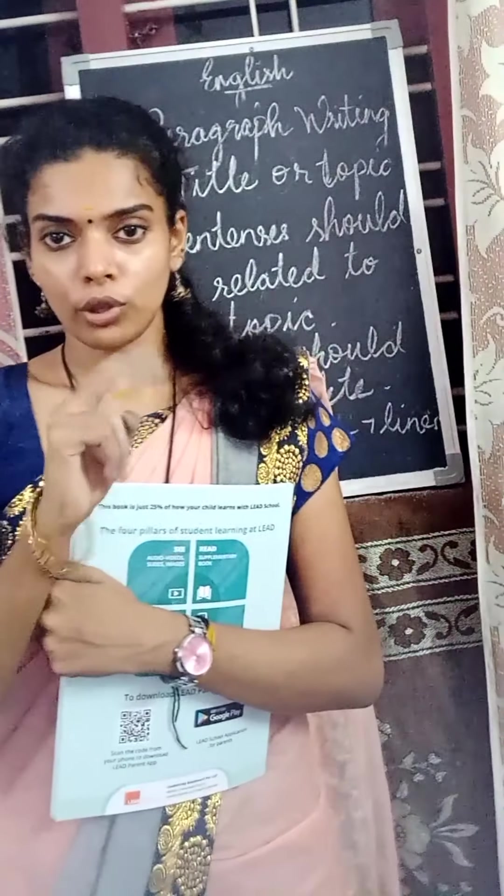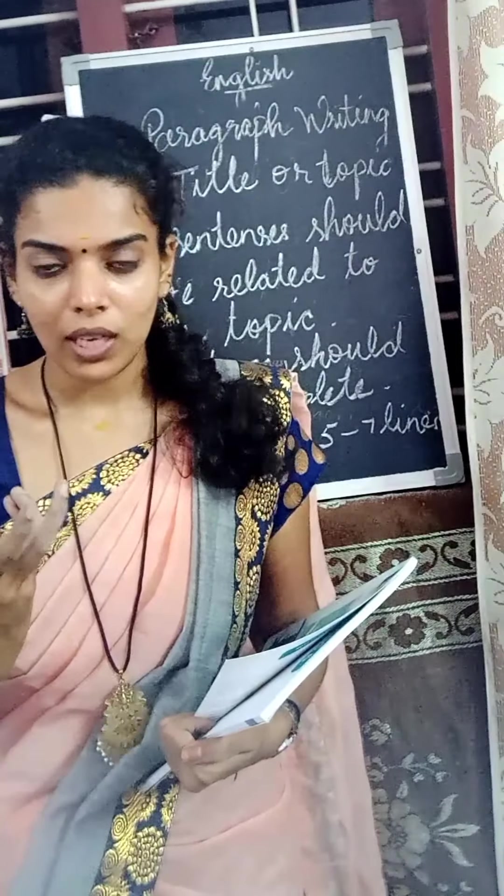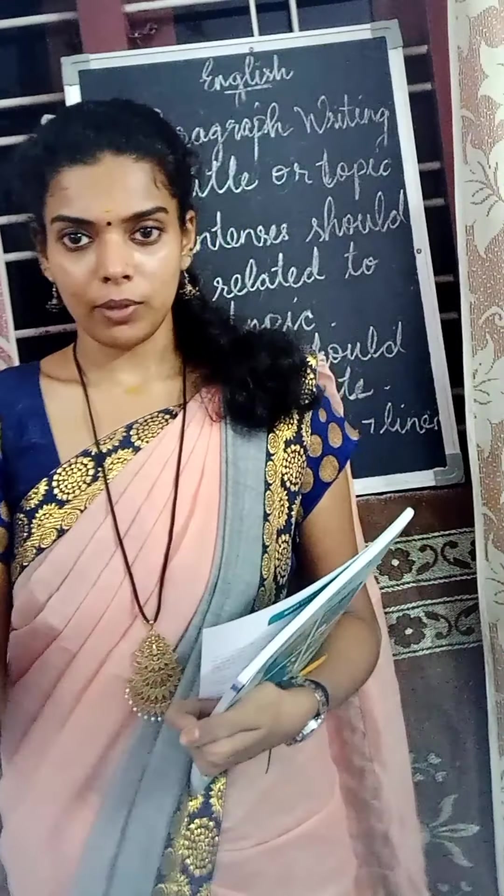Today we learned two topics. The first one is irregular verbs and the second one is paragraph writing. In irregular verbs, there are two kinds of verbs: regular verbs and irregular verbs. Regular verb means the verb which follows grammatical rules. Irregular means it won't follow any rules. In regular verbs, we add 'ed', 'd', or 'ies' while changing the verb into past tense. For example, the past tense of 'walk' is 'walked' — we simply add 'ed' to the verb.